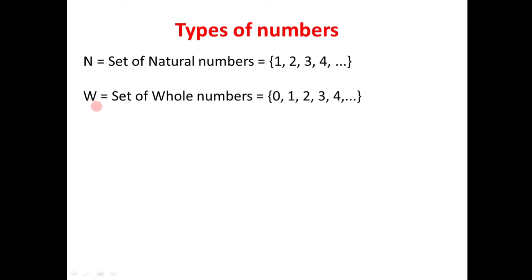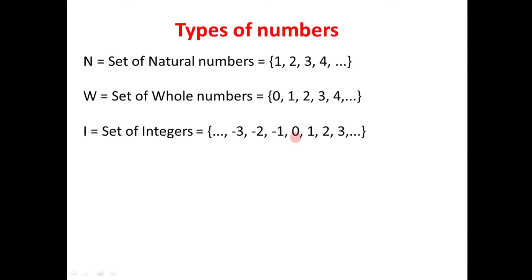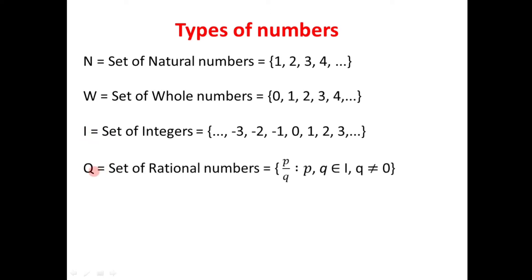The next type of number is integers. In this, as we can see, 0, all the positive numbers and all the negative numbers — if we collect all these numbers we get the set of integers, which is denoted by letter I. Then we have the next type of number, that is the set of rational numbers. Any number in the form p divided by q is called a rational number.